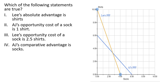Statement 1: Lee's absolute advantage is in shirts. Let's determine if that is true. If Lee spent all his time producing shirts, he could produce 10 shirts, whereas AJ could only produce 6. Since 10 is greater than 6, Lee does have an absolute advantage in shirts.